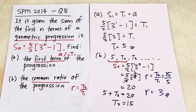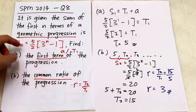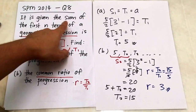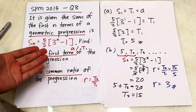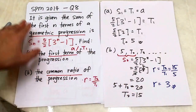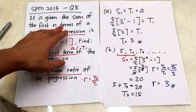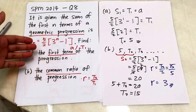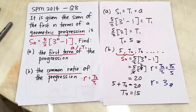This question is straightforward once you understand how to use the sum of the first n terms to find the first term and common ratio. Many students get confused when given S_n and asked to find the first or second term, but this video shows you how to do it. Hope you enjoyed the video — thanks for watching.